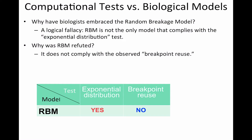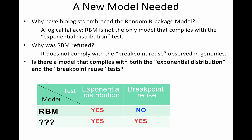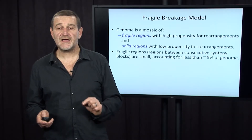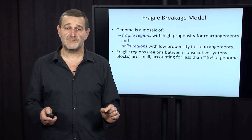but it is absolutely incorrect to claim that exponential distribution implies a random breakage model. So why was the random breakage model refuted? Because it doesn't comply with the observed breakpoint reuse. And the question is: is there a model that complies with both the exponential distribution and the breakpoint reuse phenomenon? It turns out that the so-called fragile breakage model indeed explains both phenomena.